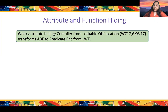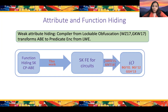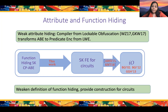For weak attribute hiding, there is a very nice compiler from lockable obfuscation—constructible from LWE—that transforms any ABE into a scheme satisfying weak attribute hiding. For function hiding, we show that even in the symmetric key setting and even only for attribute-based encryption, function hiding implies secret key functional encryption for circuits, which in turn implies indistinguishability obfuscation. So we weaken the definition of function hiding and provide a construction supporting all circuits.